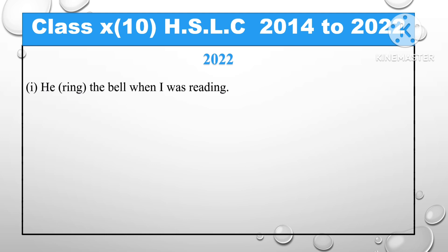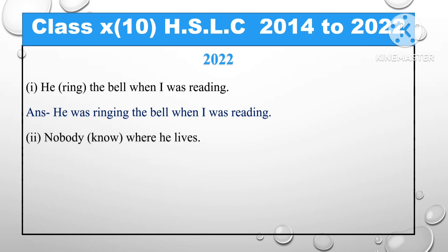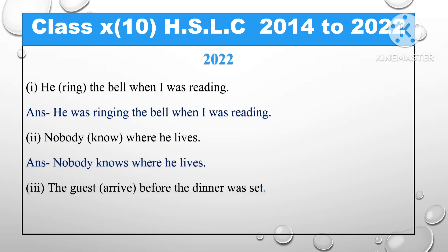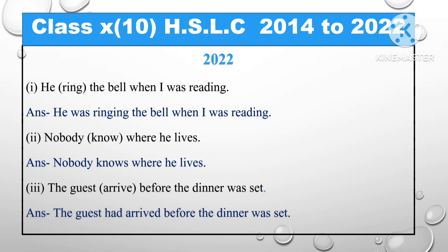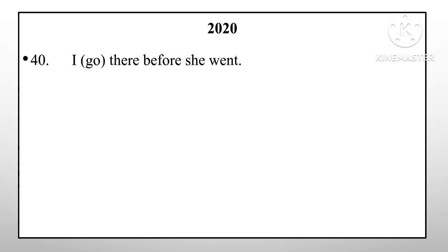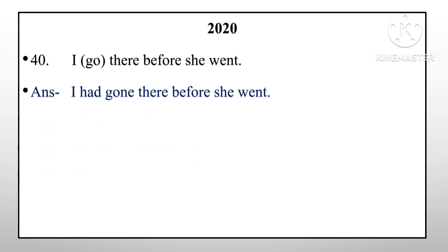Answer: 'He was ringing the bell when I was reading.' Next: 'Nobody knew where he lives' — answer: 'Nobody knows where he lives.' Next: 'The guest arrived before the dinner was set' — since 'before' is used, past perfect applies: 'The guest had arrived before the dinner was set.' Next: 'I go there before she went' — answer: 'I had come there before she went.'